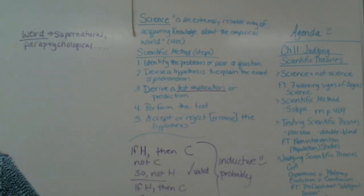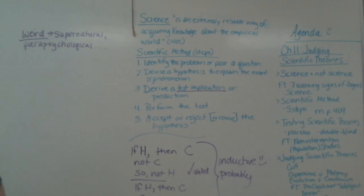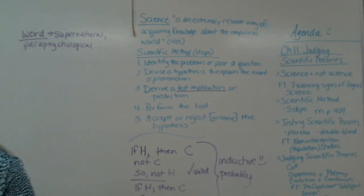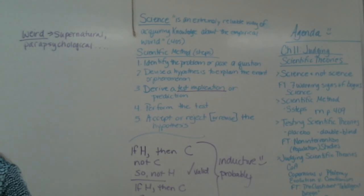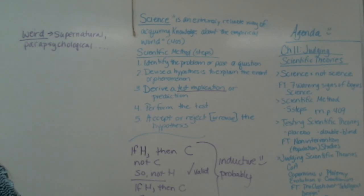So how do we judge weird theories? We do the same thing we did for testing theories: state the theory, check for consistency, assess the evidence, scrutinize alternative theories, test the theories with the criteria of adequacy, figure out who wins. Then we get into the crop circles - it's amazing stuff. The crop circle prankster on page 435.